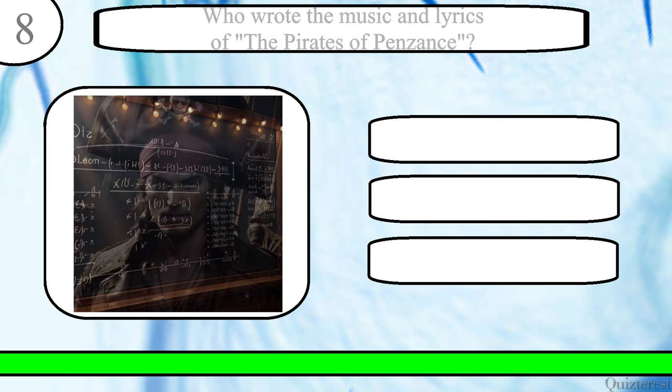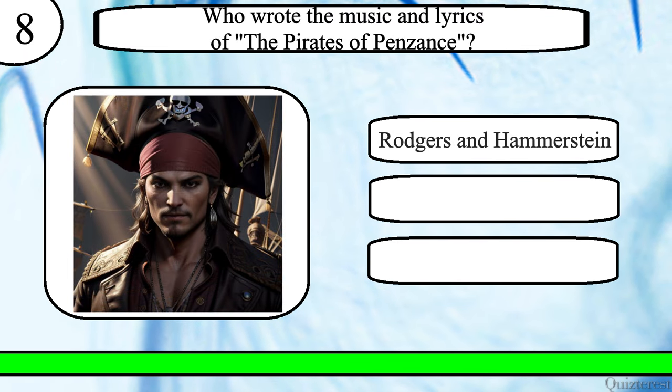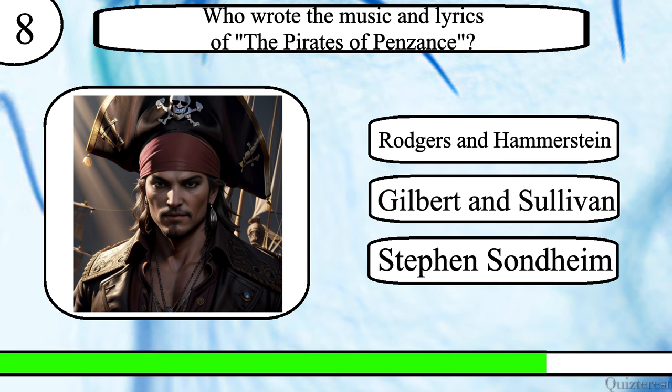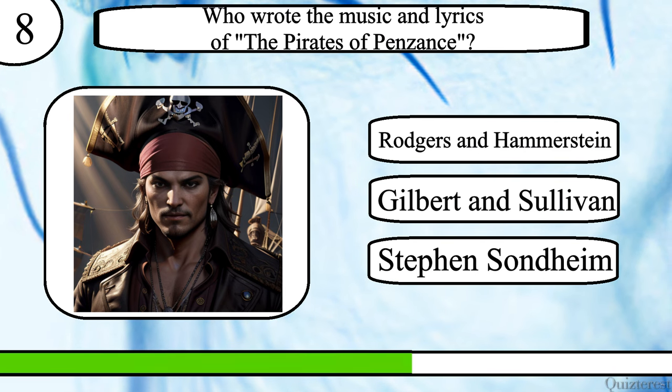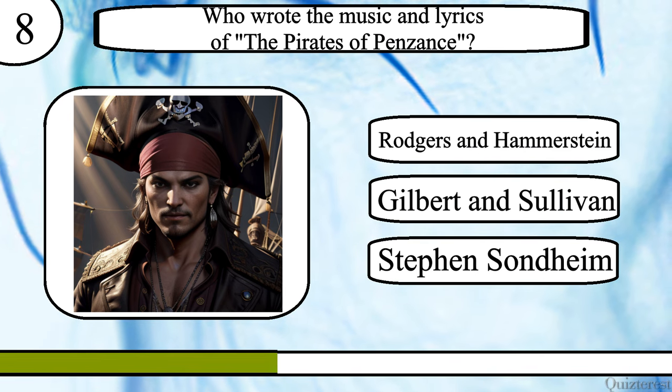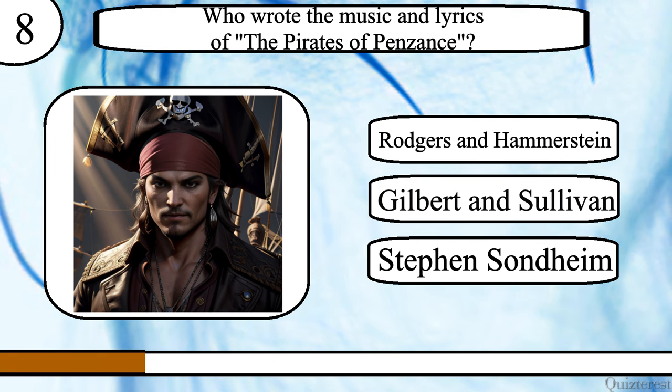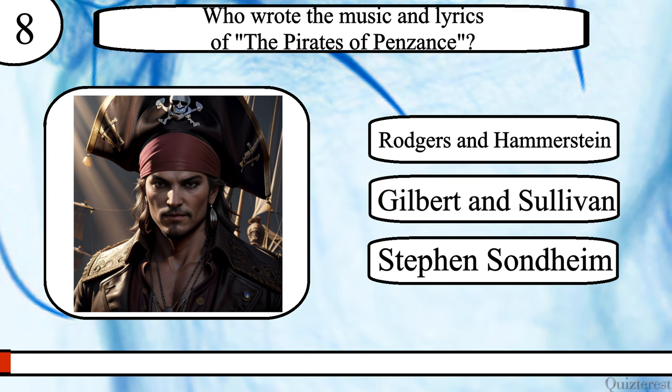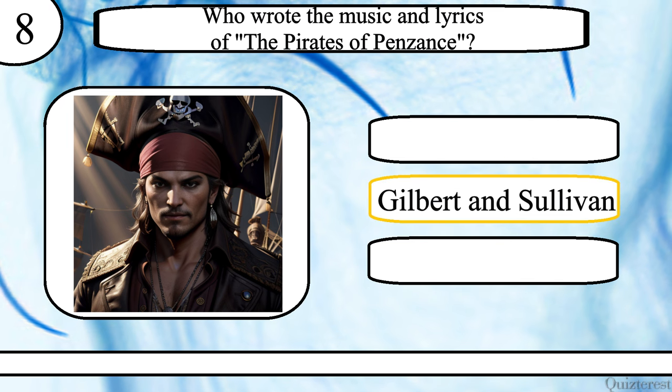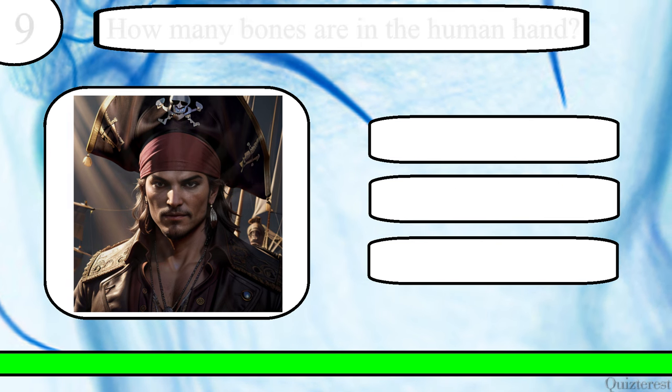Question 7. Who wrote the music and lyrics of the Pirates of Penzance? Rogers and Hammerstein, Gilbert and Sullivan or Stephen Sondheim? The correct answer is Gilbert and Sullivan.